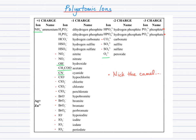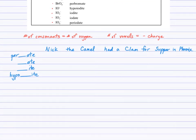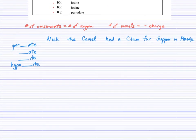So let's look at the Nick the Camel ions to start. I've set up this table here with this sentence: Nick the Camel had a clam for supper in Phoenix. The trick here is that the number of consonants in the word is going to tell us the number of oxygen atoms in the ion, and the number of vowels is going to tell us the negative charge. So one vowel, negative one charge. Two vowels, negative two charge, and so on.